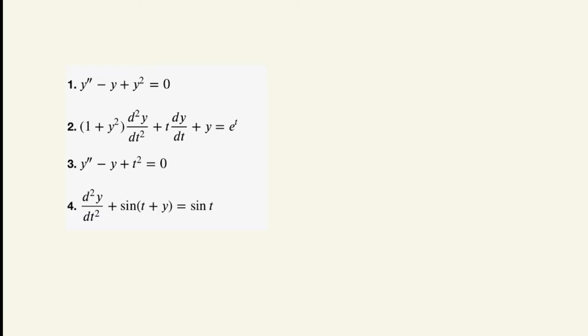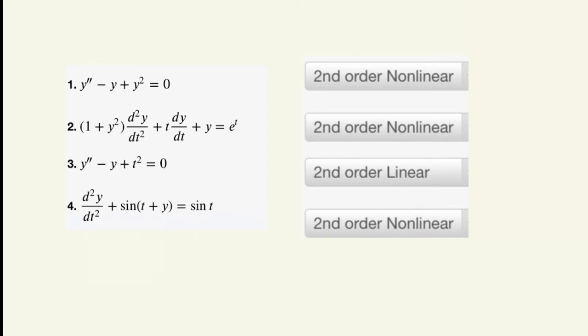I'm going to assign you these problems — pause the video and tell me the order and whether each is linear or non-linear. These are the results. Some key reminders: for a function to be linear, the coefficient is at most the independent variable, meaning it will never be the dependent variable, and the unknown function must be elevated to at most one.